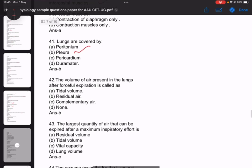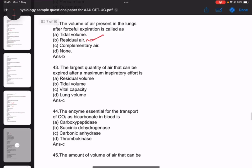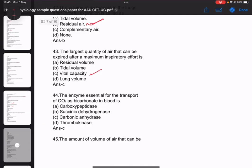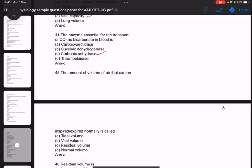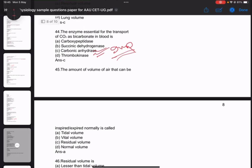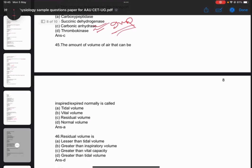Question forty-two: The volume of air present in lungs after forcible expiration is called residual air. Question forty-three: The largest quantity of air that can be expired after maximum inspiratory effort is vital capacity. Question forty-four: The enzyme essential for transport of CO2 as bicarbonate in blood is carbonic anhydrase - this is important. Question forty-five: The amount of air that can be inspired normally is called tidal volume.